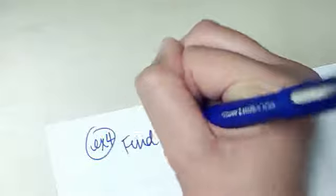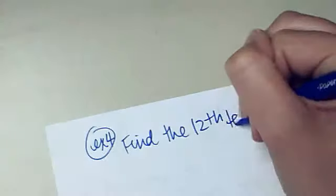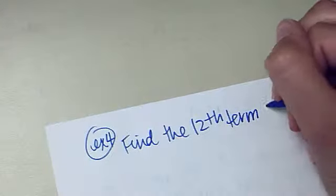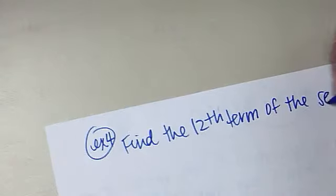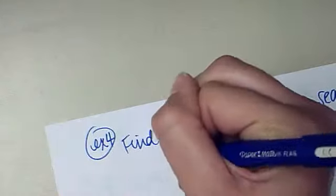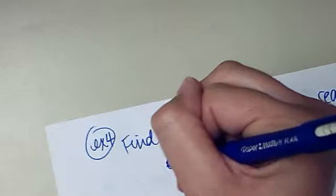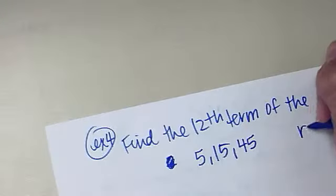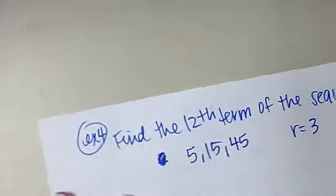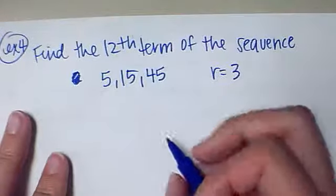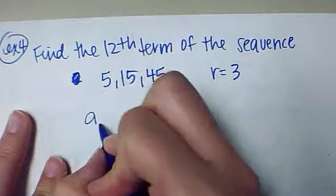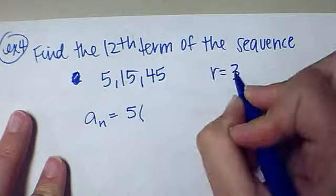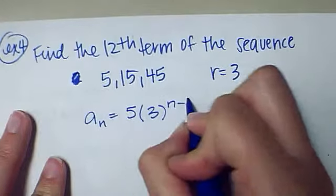One more example. This is number four. I want you to find the 12th term of the sequence where, actually, I'm just going to give you the first few, 5, 15, and 45 are the first three. And the common difference is 3. So let's start with a sub n. The first term is 5 times the common difference 3 to the n minus 1. I want the 12th, so I'm going to plug in 12.